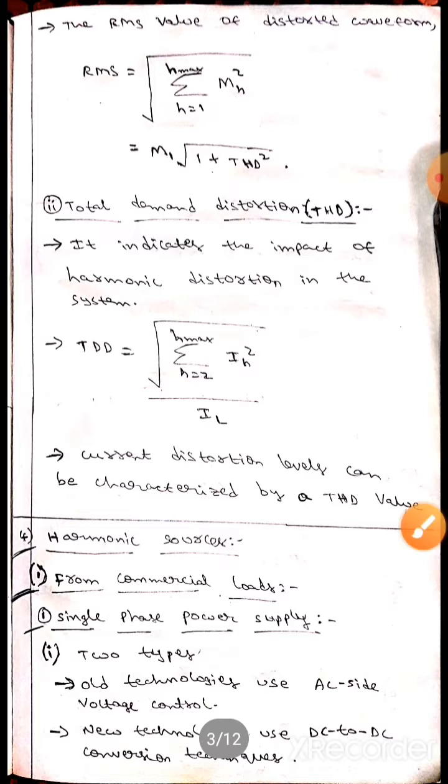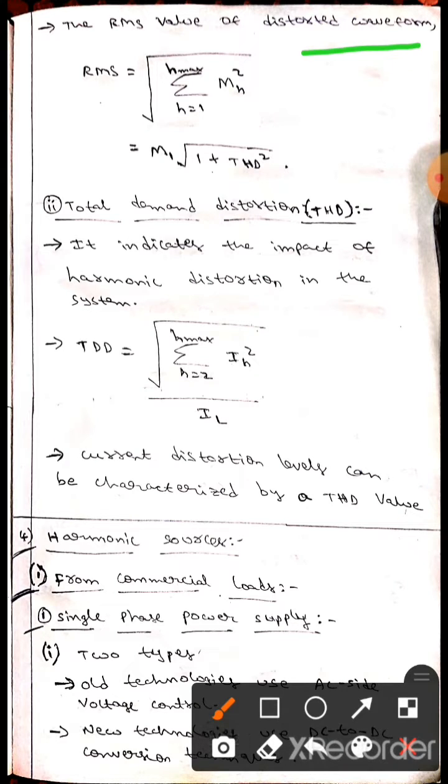Here the RMS value of distorted waveform is RMS equals root over sigma h equals one to h max, Mh square.